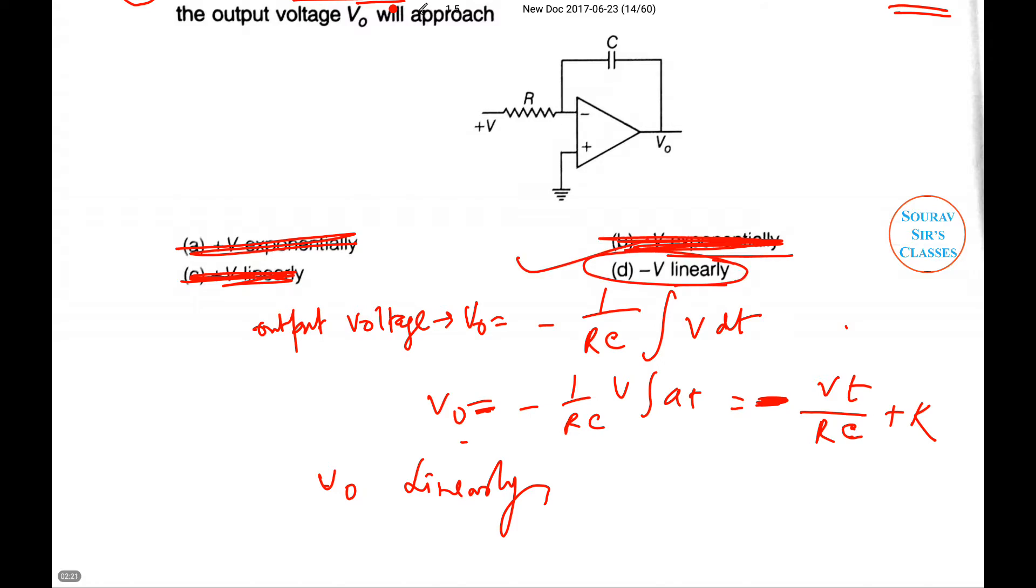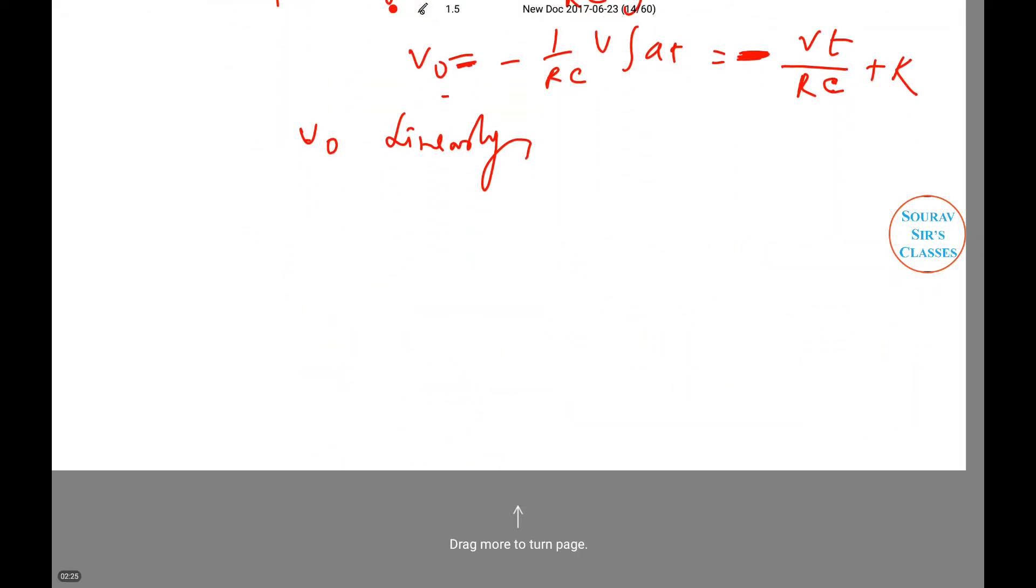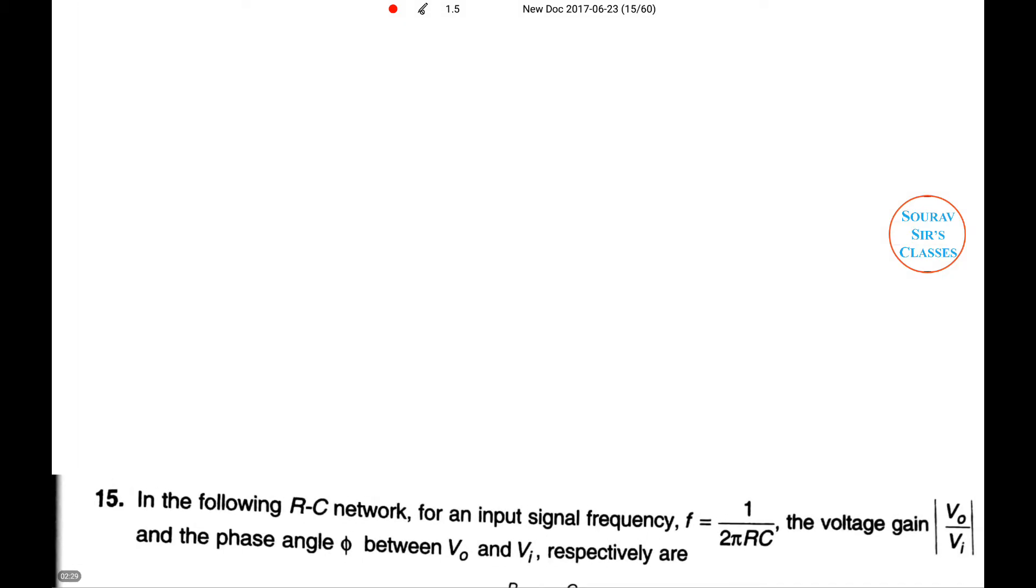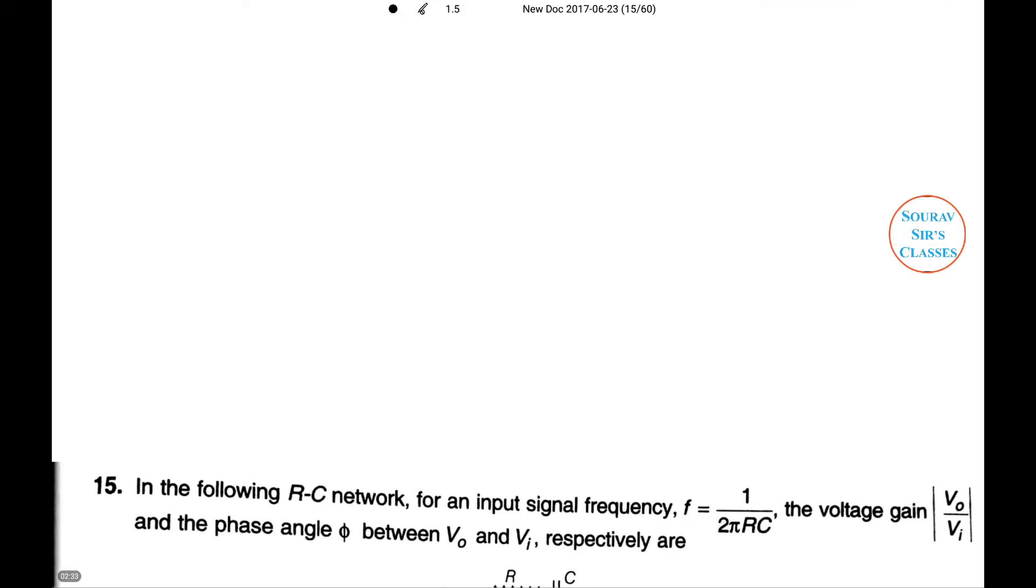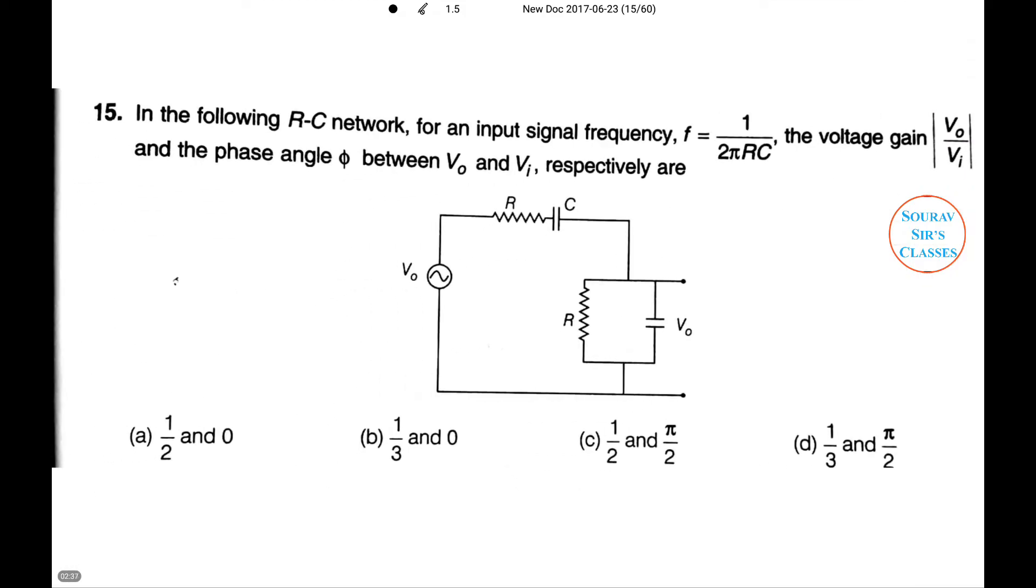Question 15: We have an RC network. For an input signal frequency F = 1/(2πRC), the voltage gain |V0/Vi| and the phase angle θ between V0 and Vi are respectively...